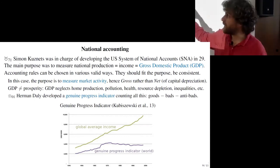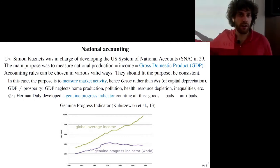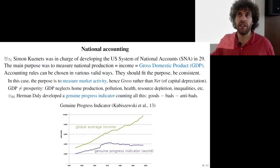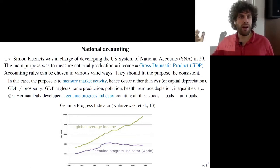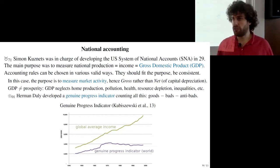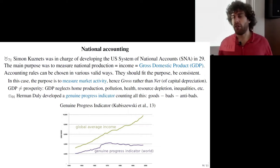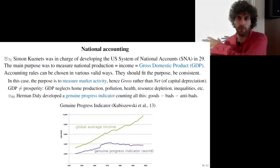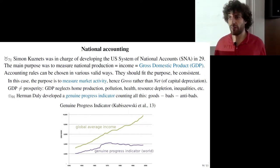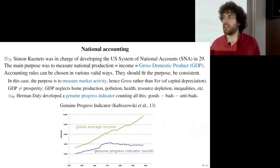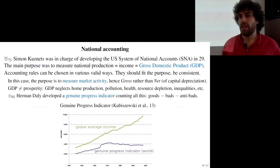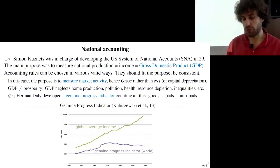These accounting rules — even more so in the GPI than in GDP — are subject to numerous hypotheses, such as what is the cost of one ton of CO₂. There are many assumptions behind both indicators that make them imprecise and subject to criticism.